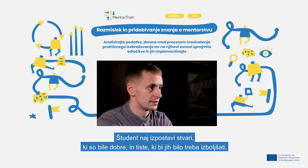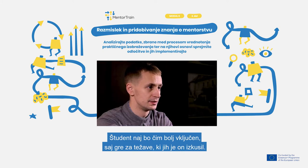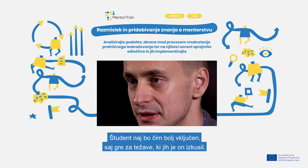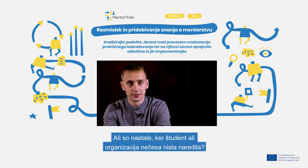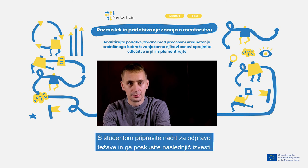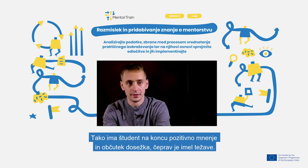Ask the student to bring out things that were good and things that should be improved. If you find problems, try to analyze where they arose from, and involve the apprentice as much as possible since these are the problems he or she experienced. Try to understand where the problems came from and why — did they start because of something not done by the apprentice or by the organization? Make a plan with the apprentice on how to solve it and try to implement it the next time, so the apprentice has a positive feeling and a sense of achievement in the end even though there were problems.